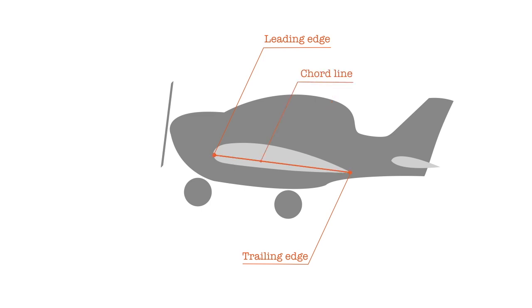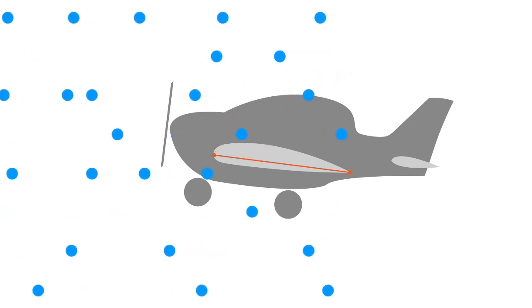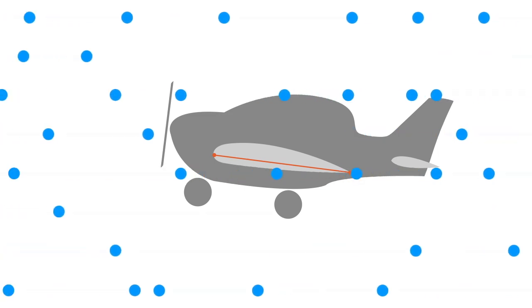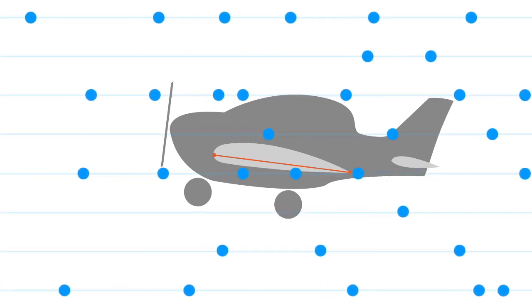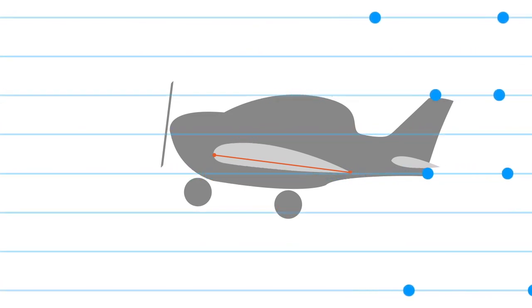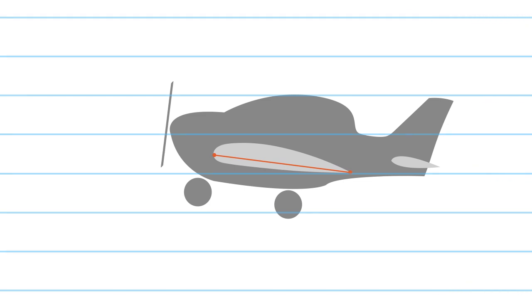In flight, the aeroplane passes through air particles in the atmosphere. These particles form a common path that indicates the relative motion between the aeroplane and the atmosphere. This is called relative airflow, and it acts in the opposite direction to the flight path direction of the aeroplane. The angle of attack is the angle between the chord line and the relative airflow.